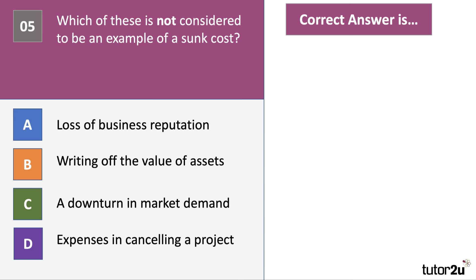Two questions to go. Here's question 5. Which of these is not considered to be an example of a sunk cost? A sunk cost, by the way, of course, is a cost that you have to pay if you leave a market. And the higher are the sunk costs, the less contestable is the industry. So which of those four options there, A, B, C and D, is not considered to be an example of a sunk cost?